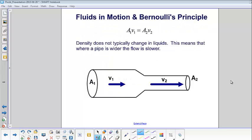Density does not typically change in fluids. This means that where a pipe is wider, the flow is slower, and where it's narrow, it's quicker.